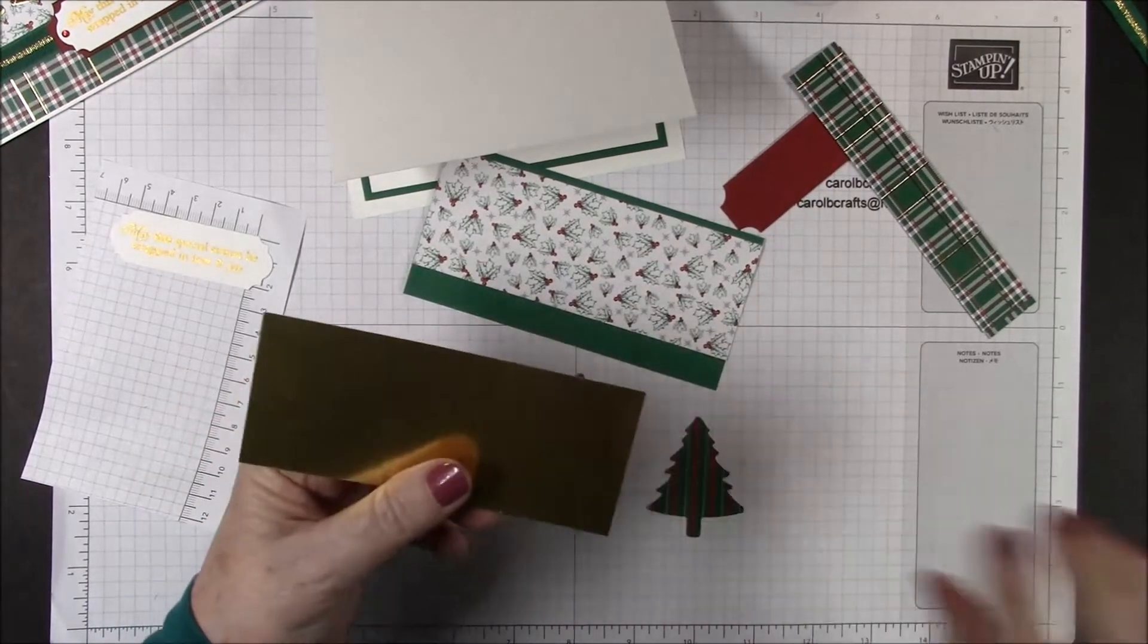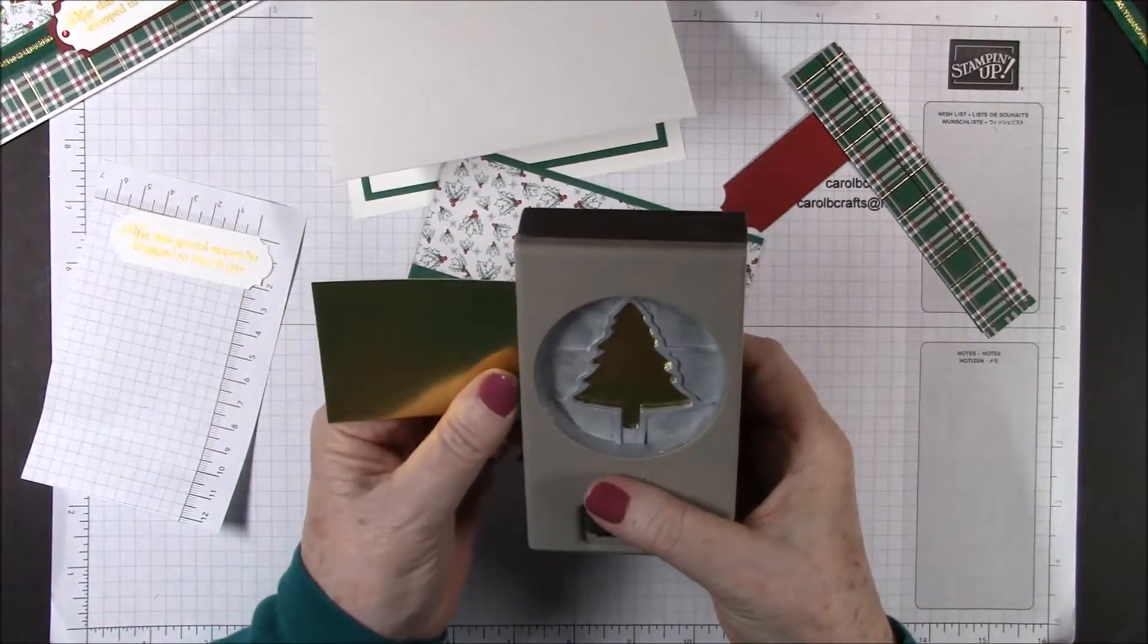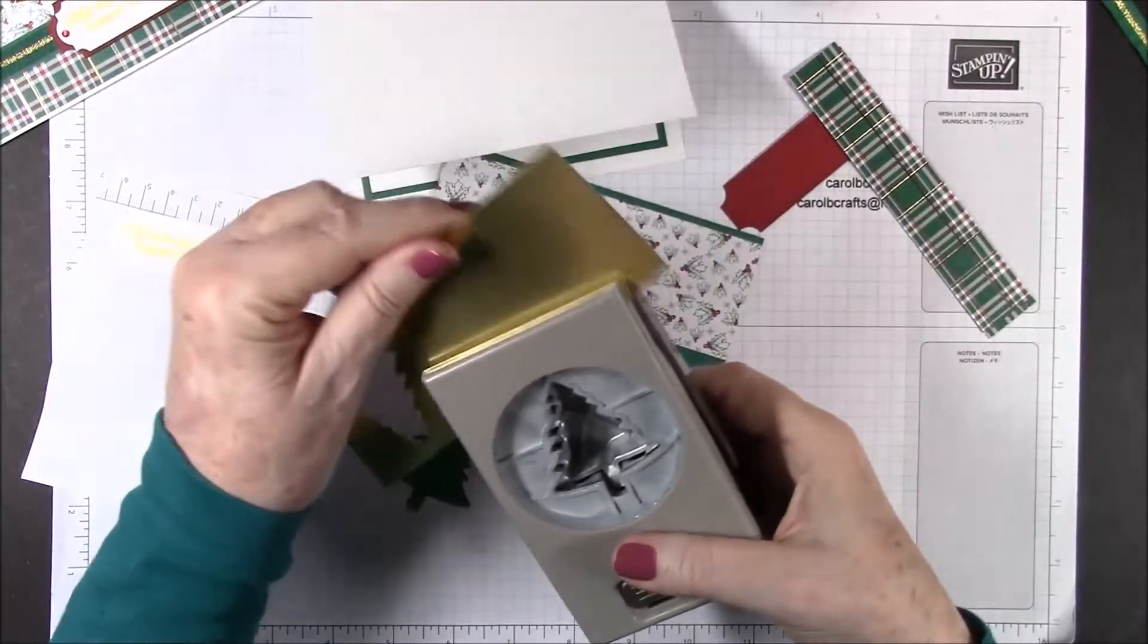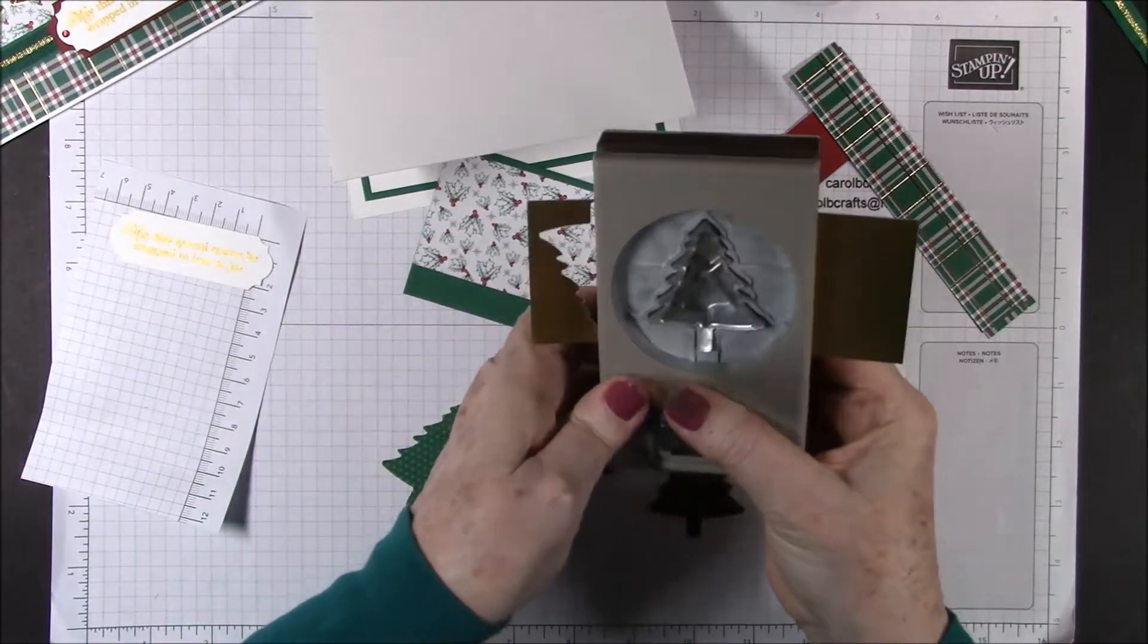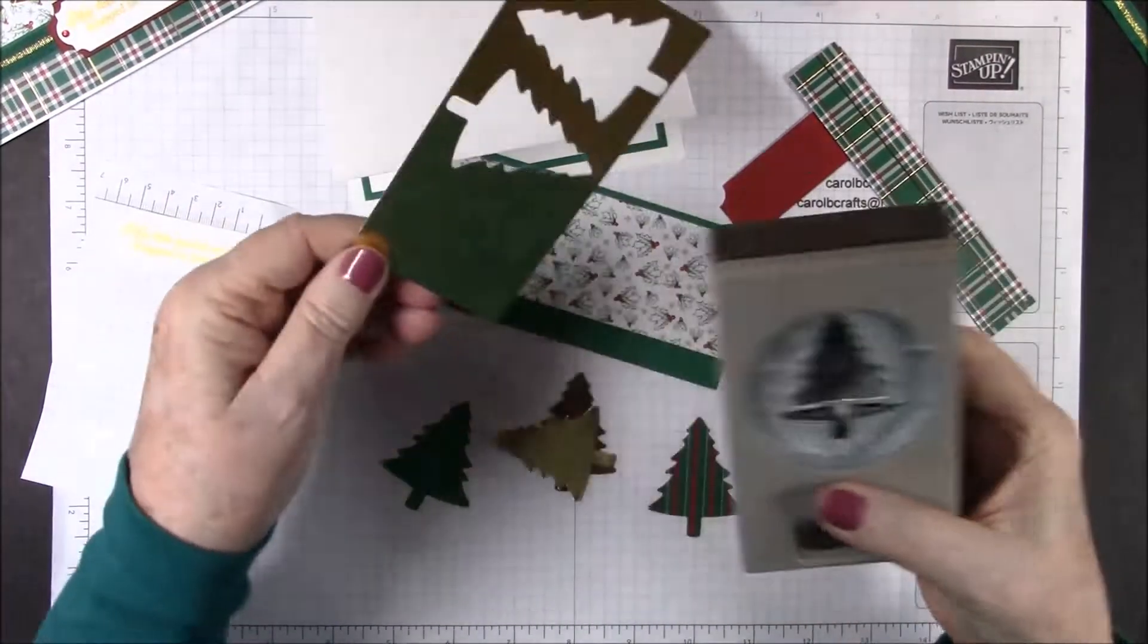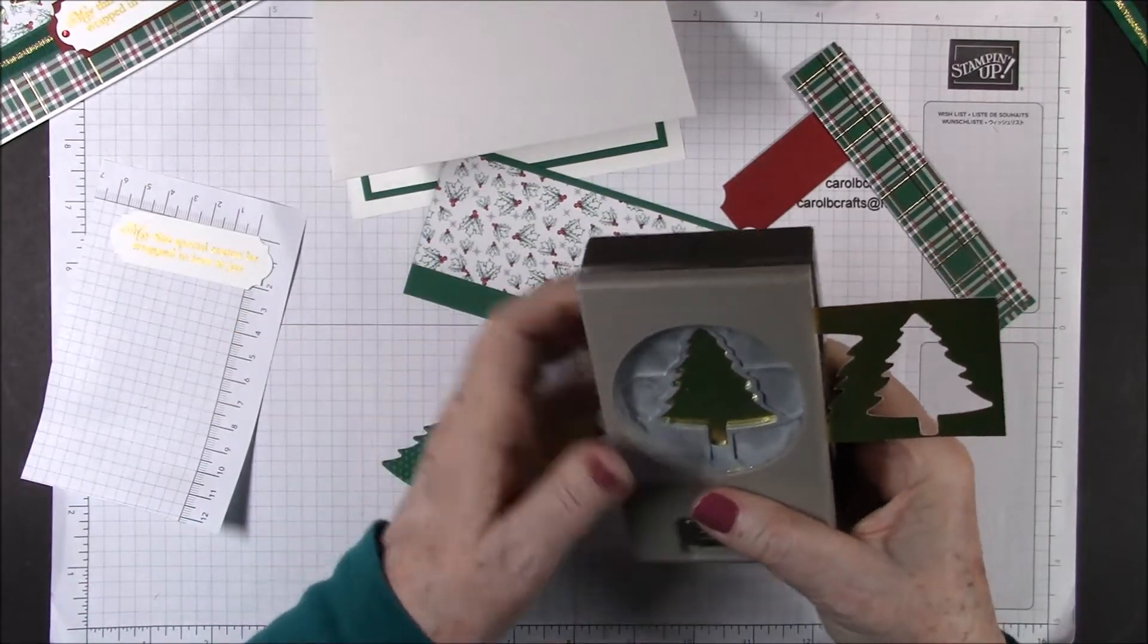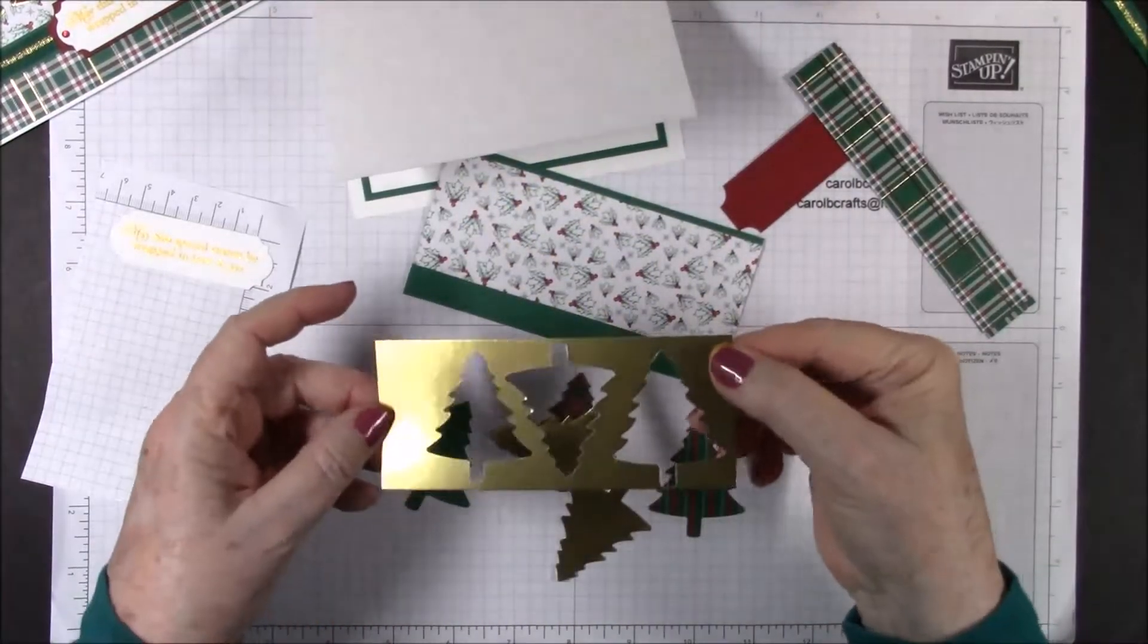Now we're going to take our gold foil sheets, five and a quarter by two and a quarter, and we're going to punch three of the gold trees out. I'm going to punch it that way, then this way, and then this way just to make sure I have room for all of my trees.